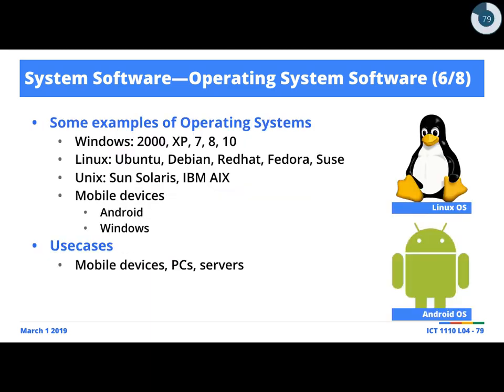Similar to application software, there's a whole host of operating system software — hundreds of them. There's operating system software specific to embedded devices. Because embedded devices typically perform specialized tasks, hardware manufacturers come up with their own operating systems best suited to their devices. Some examples we may know: Windows — and Microsoft has come up with different operating systems designed to perform different tasks, specific for servers and for mobile devices.